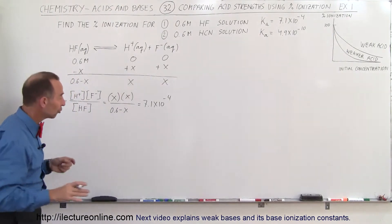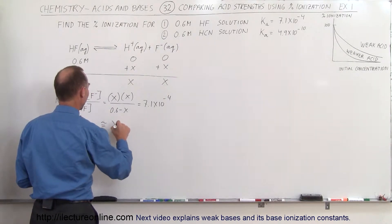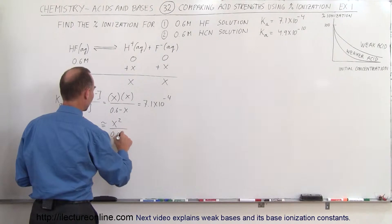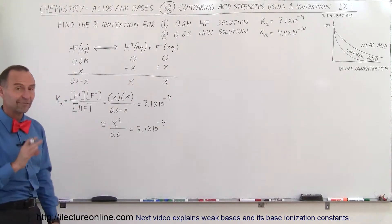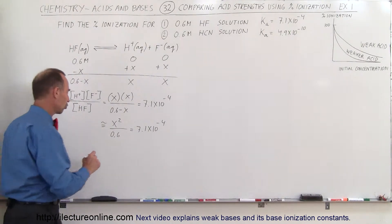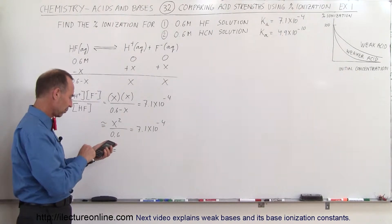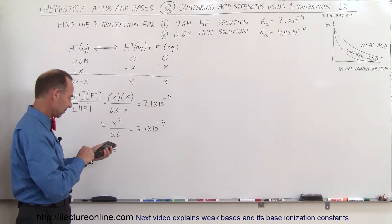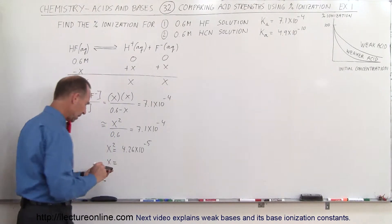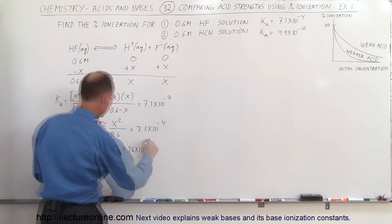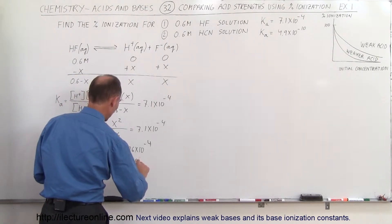We'll assume X is very small compared to 0.6, so the expression simplifies to X squared divided by 0.6 equals 7.1 times 10 to the minus 4. We can only use this approximation if the percent ionization is less than 5% as a rule of thumb. So X squared equals 0.6 times 7.1 times 10 to the minus 4, which gives 4.26 times 10 to the minus 4. Taking the square root gives X equals 0.0206.